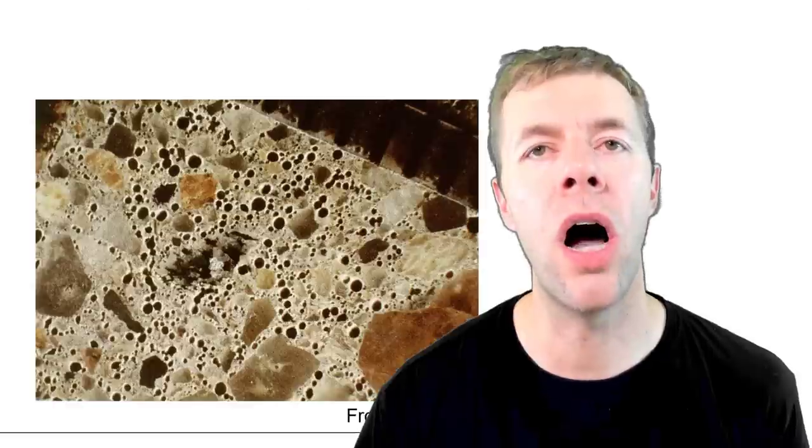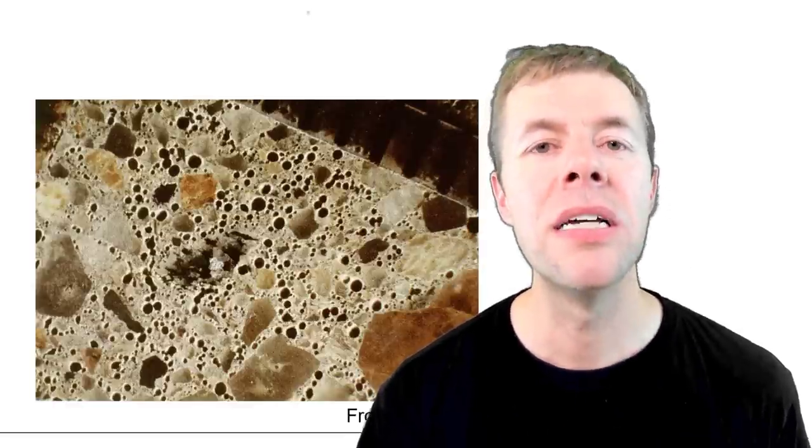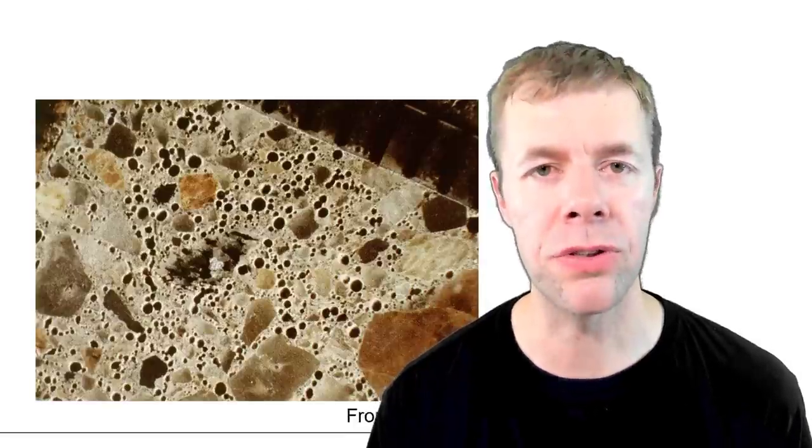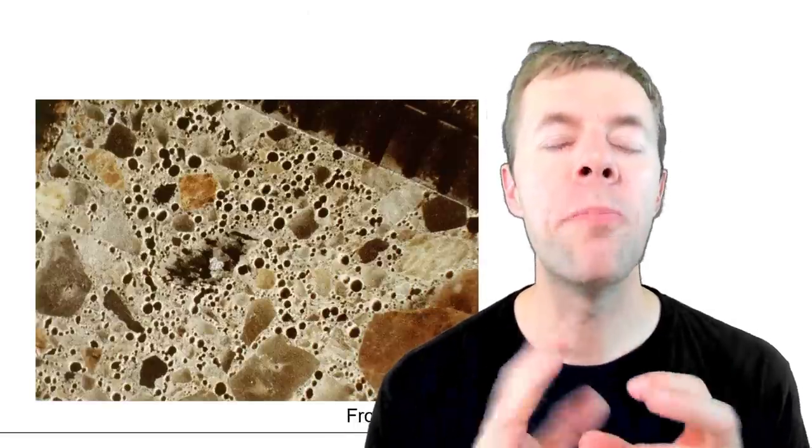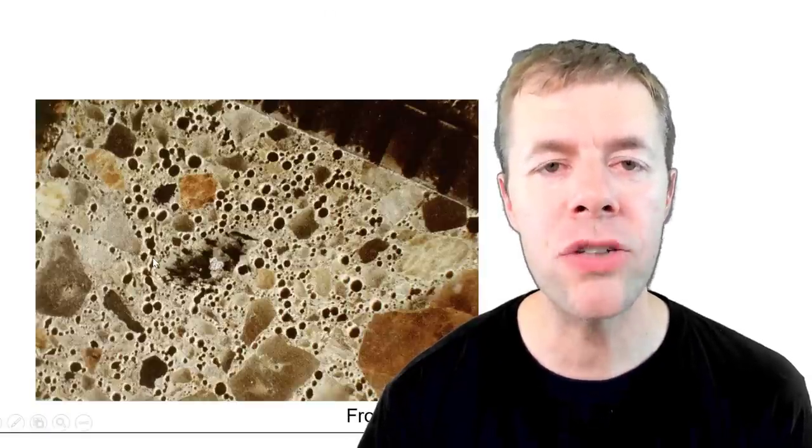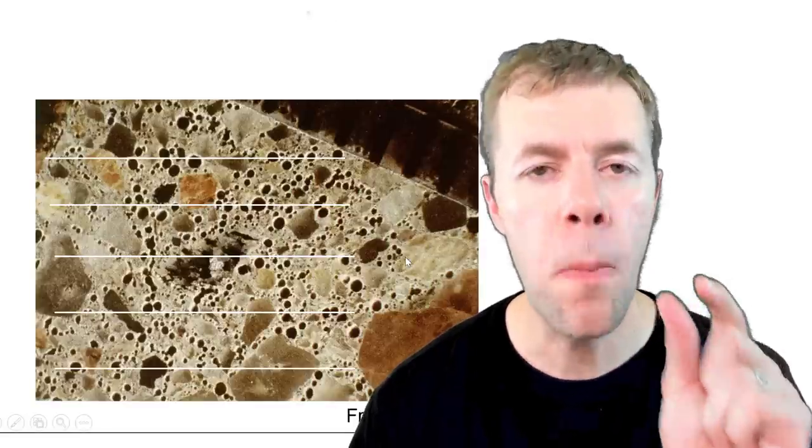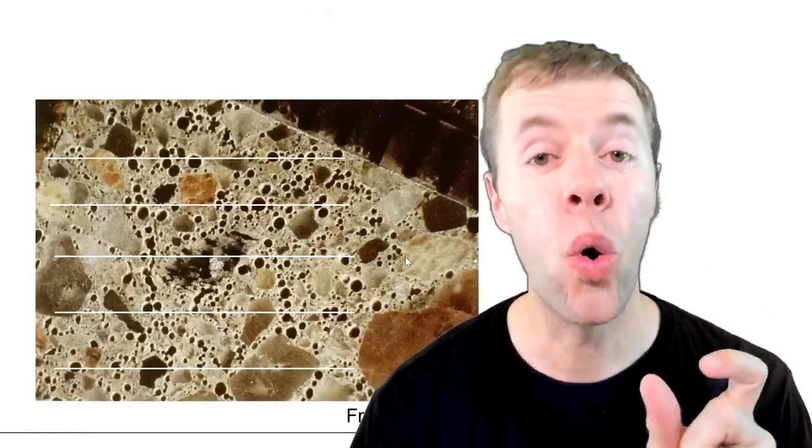So how do you measure this? How do we understand what's going on? Typically we use a hardened air void analysis. It's called an ASTM C457 analysis. This is where you cut the concrete, you polish it, and you look at it underneath the microscope. You basically trace over the surface in a line and every time that line intersects a bubble you measure it. That's called a cord.